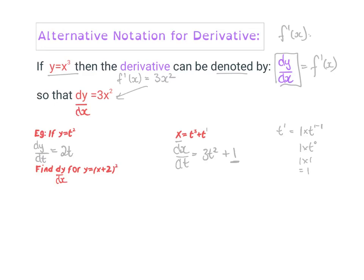For this last one, find dy/dx for y equals (x+2) squared. At this point you probably need to expand that. So I write y equals x squared plus 4x plus 4, using the perfect square pattern. Therefore dy/dx equals 2x plus 4.